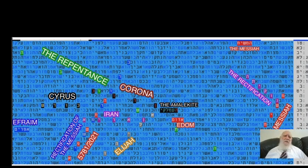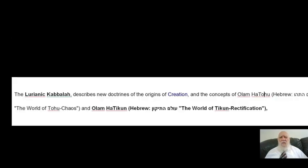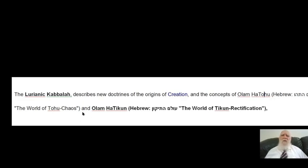What we want to emphasize is the amazing phenomena of what we are going to see. It is really very important to know that there is Lurianic Kabbalah which describes a new doctrine of the origin of creation and the concepts of olam ator — in Hebrew, the world of chaos — and olam atikun — in Hebrew, the world of tikun, meaning rectification.